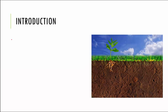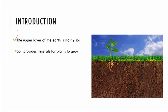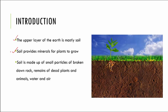The upper layer of earth is made up of soil, and soil is so important that it provides minerals for plants to grow. Soil is made up of very small particles of broken down rocks, dead and decaying plants and animals, water and air. Apart from all of these, soil even has very tiny living things called bacteria. So we have to remember soil is not just one thing but is made up of so many things.